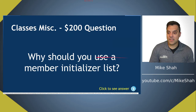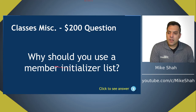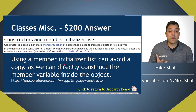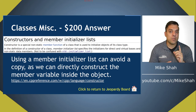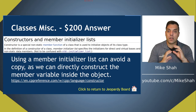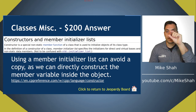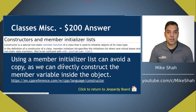For 200: why should you use a member initializer list? Note this is different from an initializer list — two distinct ideas. When using a member initializer list, you avoid making copies because you directly construct the member variable inside the object. A playlist video tracks the number of allocations to prove this. Instead of taking a parameter, creating a copy, then assigning, a member initializer list skips all that for better performance.